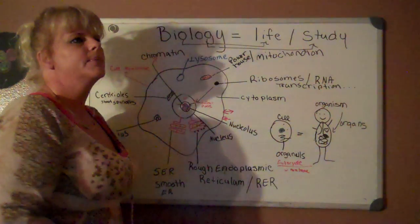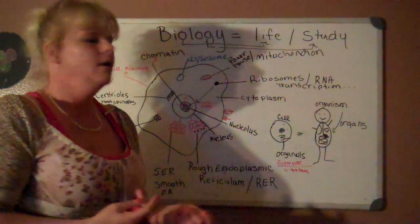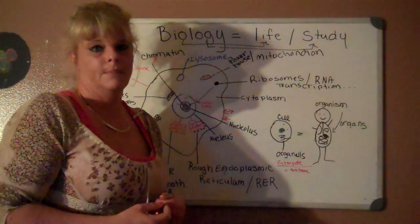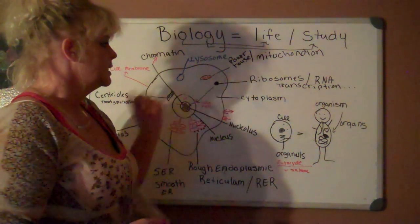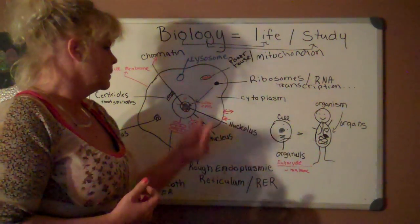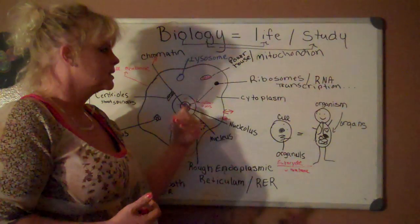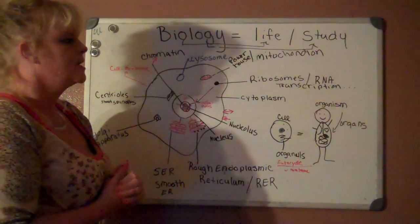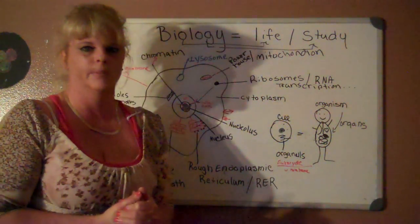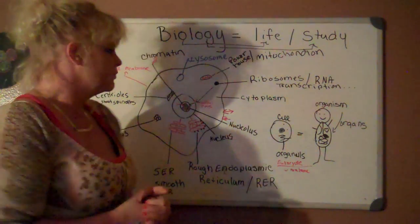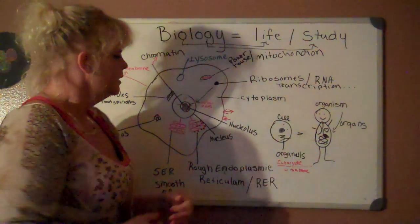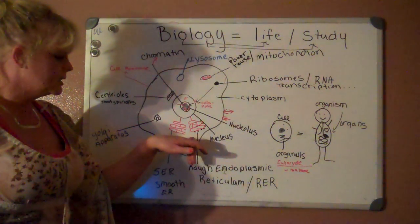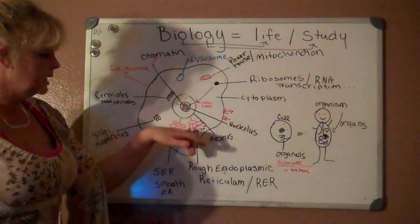This small circle — smaller than the others — is a ribosome. It acts kind of like a copy machine for the DNA that is inside the nucleolus. You'll hear the term RNA transcription, so write that down so it looks familiar.